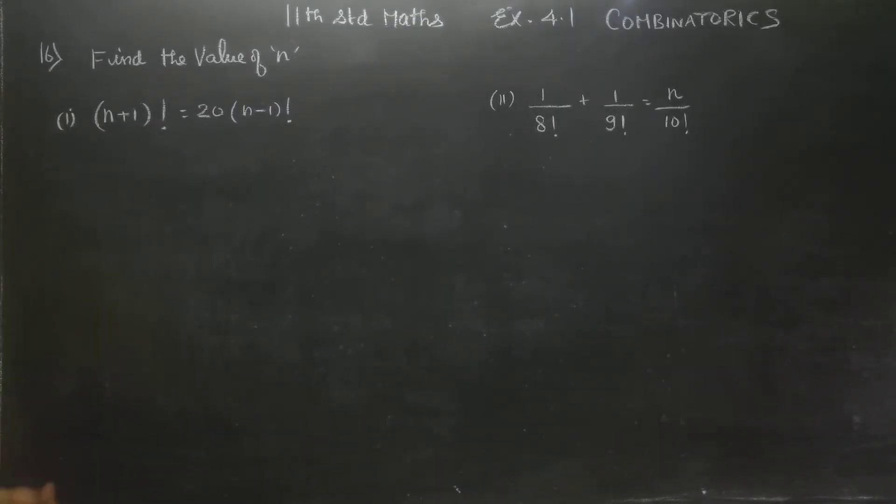First of all, n plus 1 factorial is equal to 20 into n minus 1 factorial. Stage number 1, n plus 1 factorial by n minus 1 factorial is equal to 20. Stage number 2, this is the value of n plus 1 factorial.